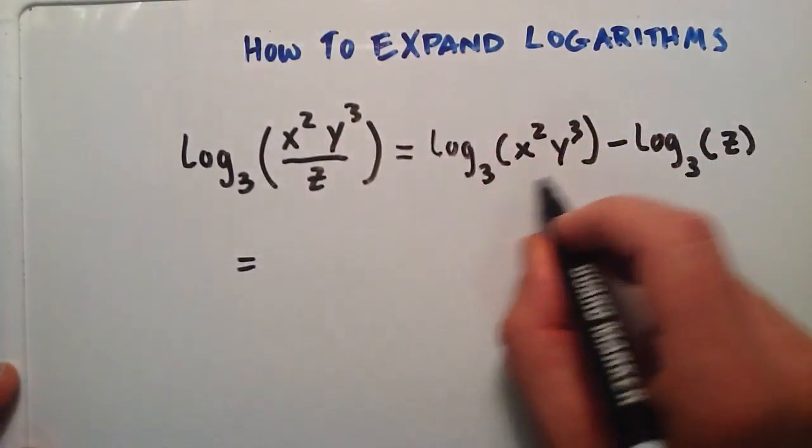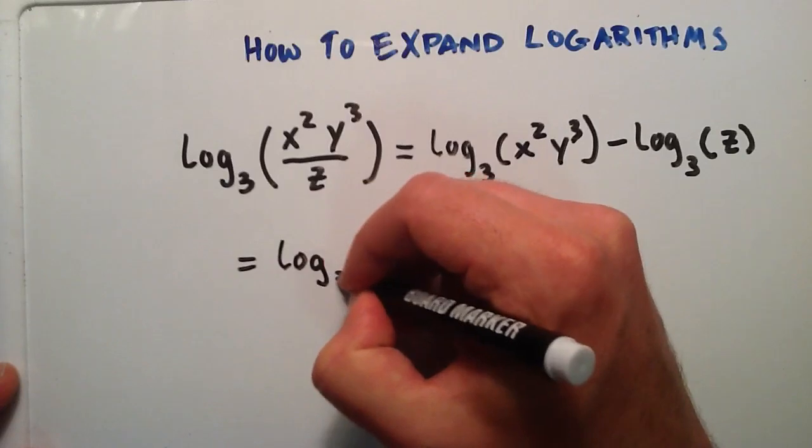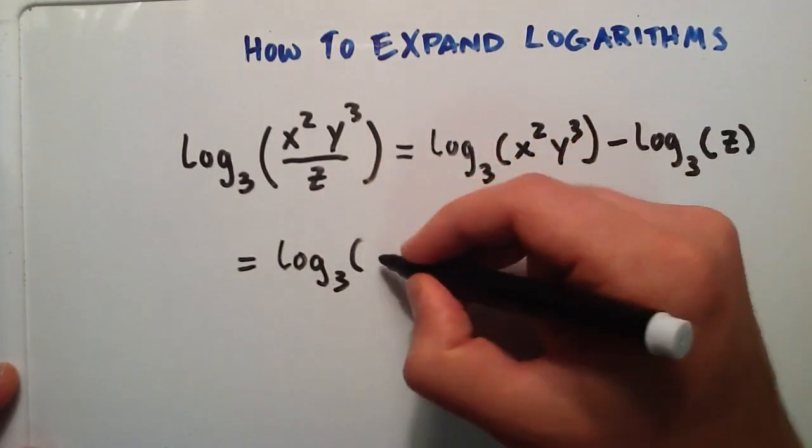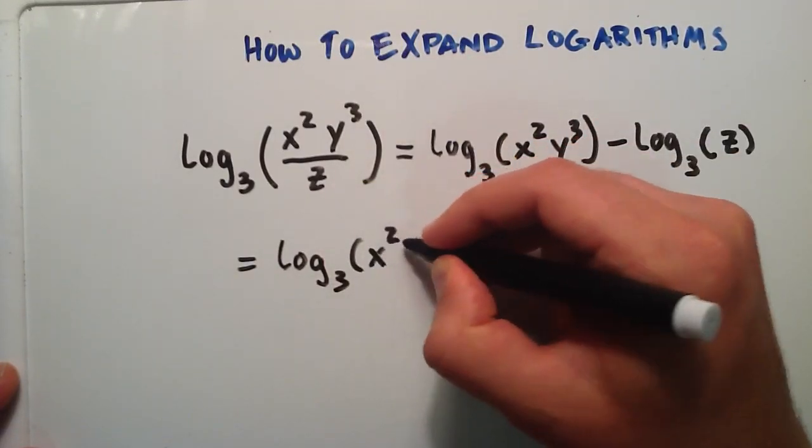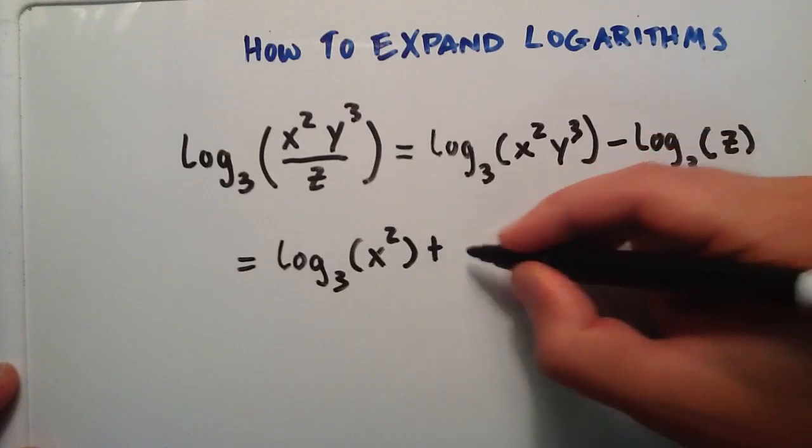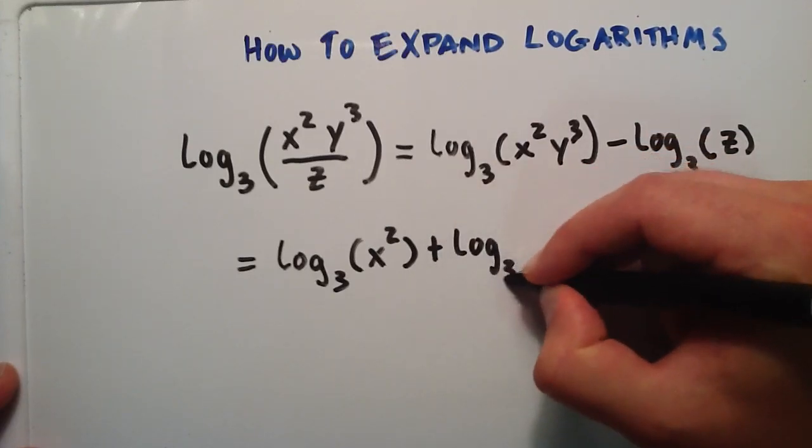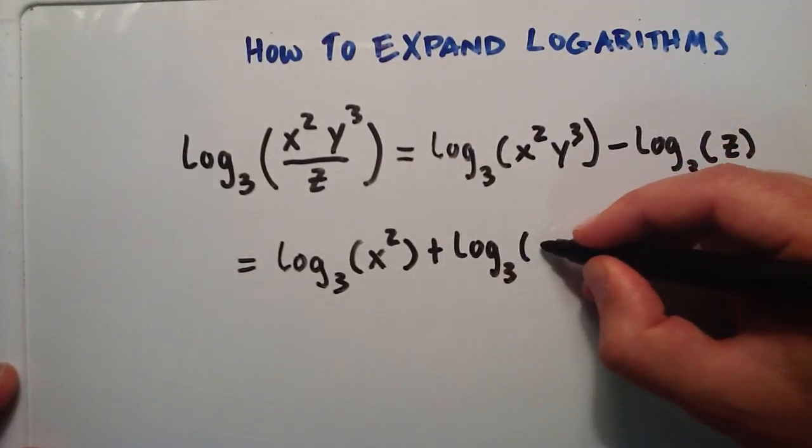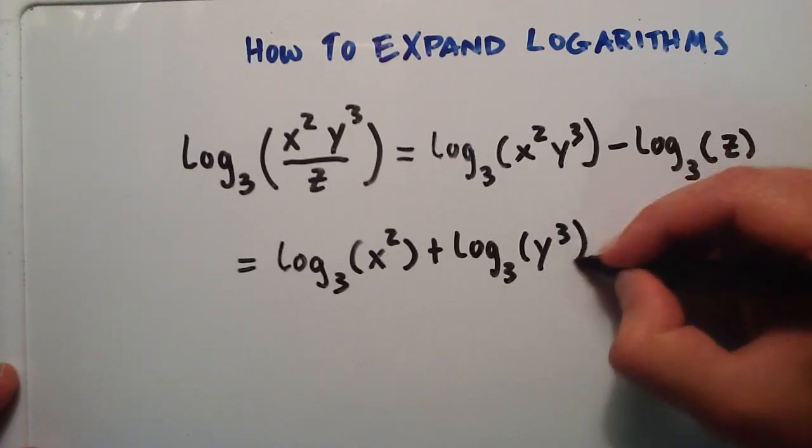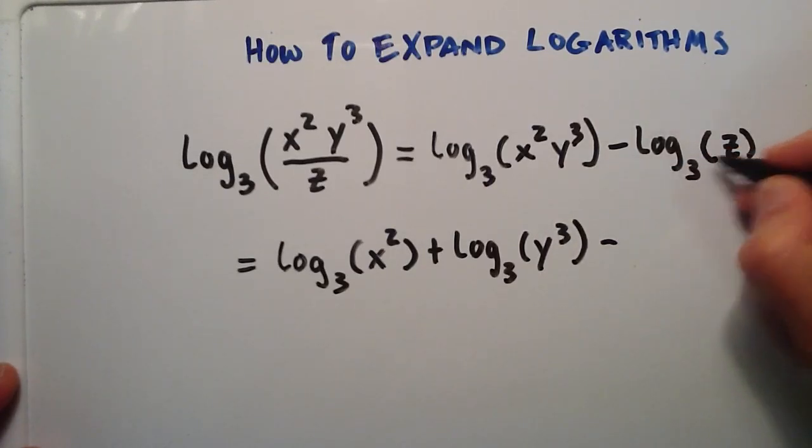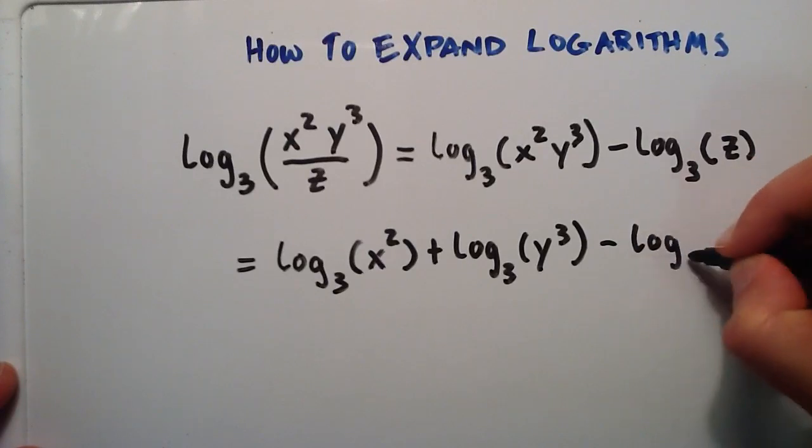So let's go ahead and do that. So we're going to break this apart into log base 3 of the first, which our first is x squared, plus log base 3 of the second. In this case, it's y to the third.